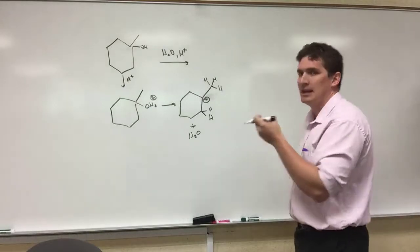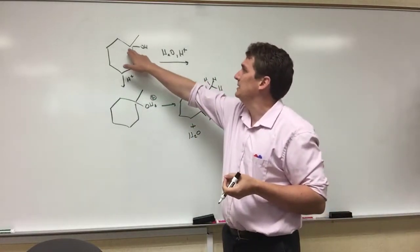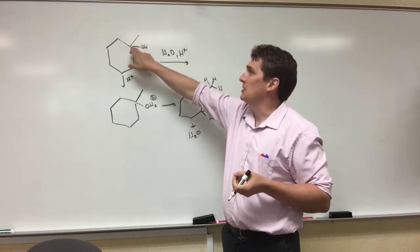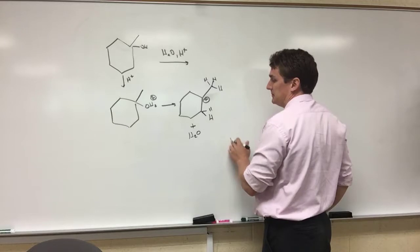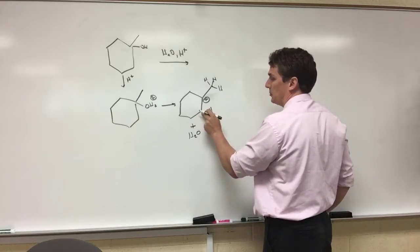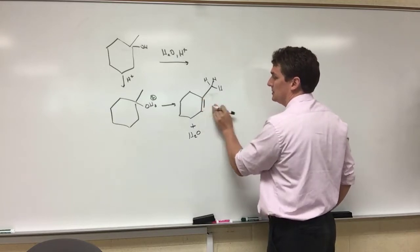So if we're going to use this acid-catalyzed dehydration, we're not going to get an alkene or a double bond between this carbon and this methyl group. We're going to get it between this and the nearest hydrogen. So we're going to end up breaking this bond and creating a double bond between these two carbons.